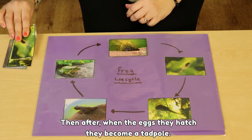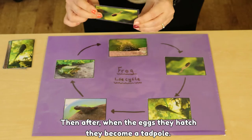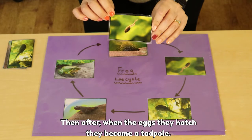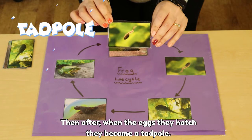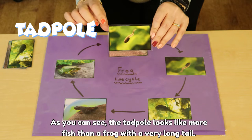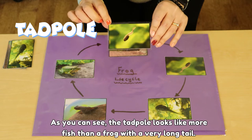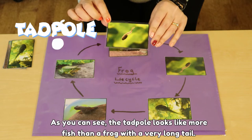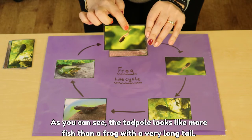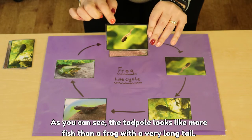Then after, when the eggs hatch, they become a tadpole. As you can see, the tadpole looks more like a fish than a frog, with a very long tail.